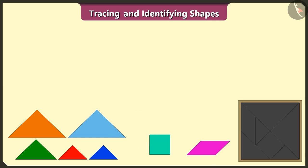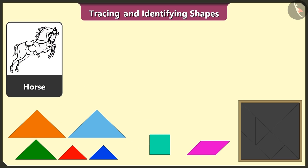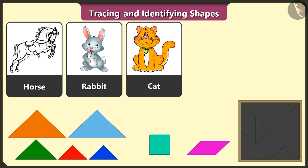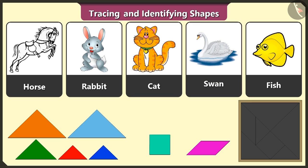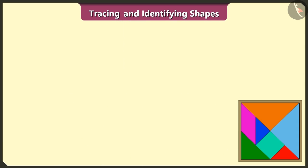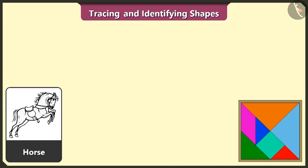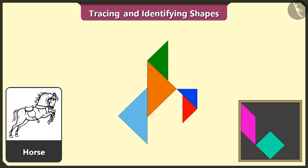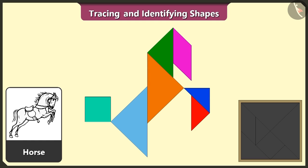Today we will create figures of a horse, rabbit, cat, swan, and fish using these shapes. Look, this is a horse. Now we will make a horse using five triangles, one square, and one quadrilateral. See, the horse is ready!